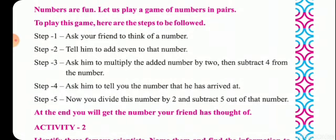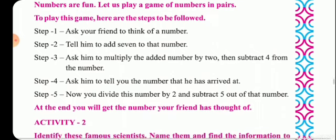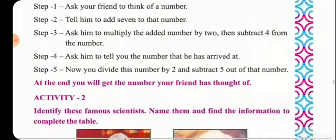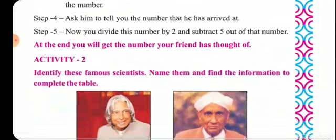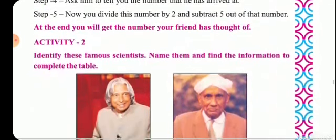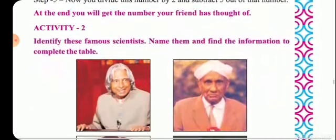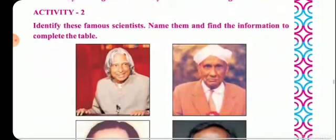Step 4: Ask him to tell you the number he has arrived at. Step 5: You divide this number by 2 and subtract 5. At the end, you will get the number your friend or parents had thought of. Do let me know how your experience was in our interactive session.